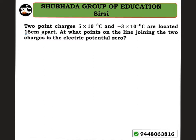First, let's draw a free body diagram. Here is point A, with 5 into 10 to the power of minus 8 coulomb charge, and here is point B with minus 3 into 10 to the power of minus 8 coulomb charge. The distance between them is 16 centimeters.